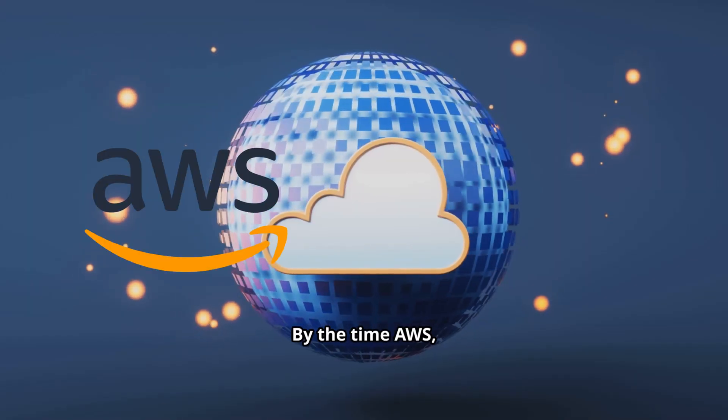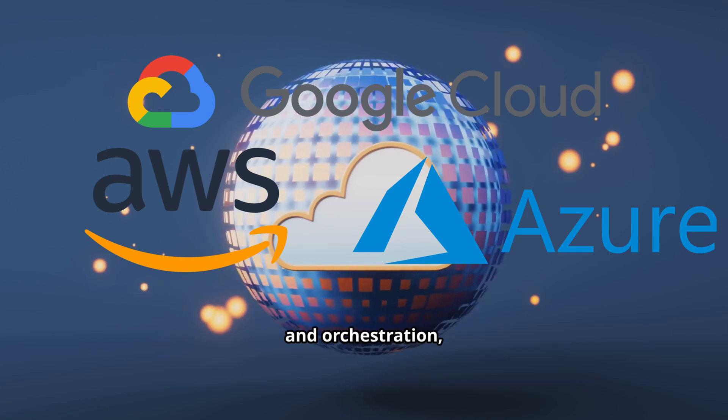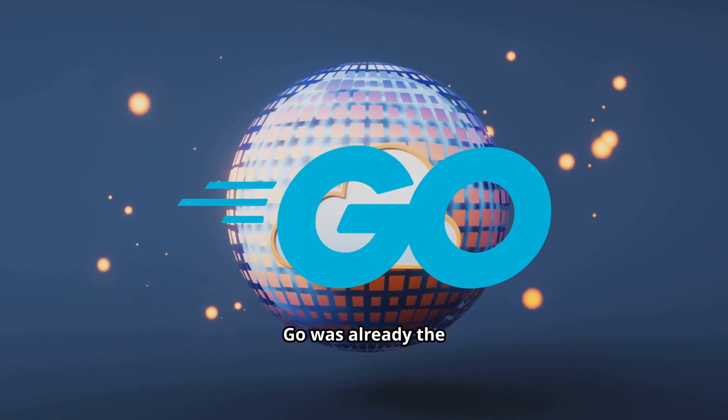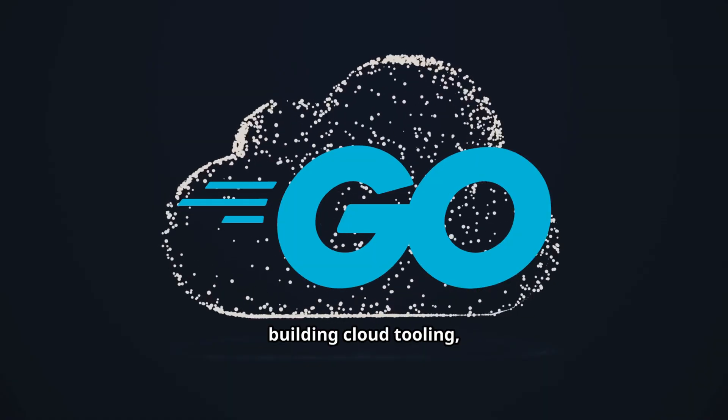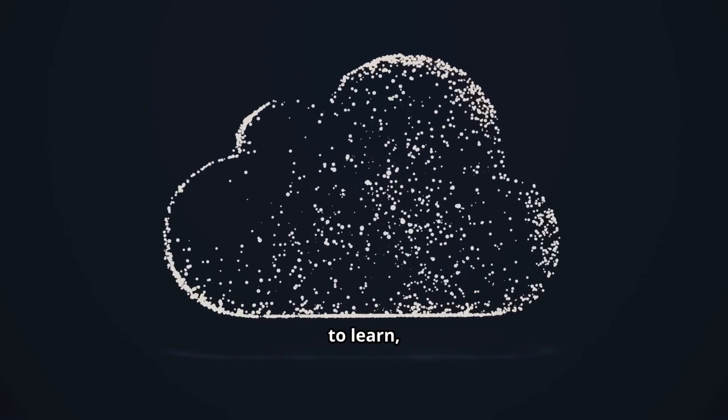By the time AWS, Azure, and Google Cloud embraced containers and orchestration, Go was already the default choice. If you were building cloud tooling, you picked Go, because it was fast to learn, fast to run,